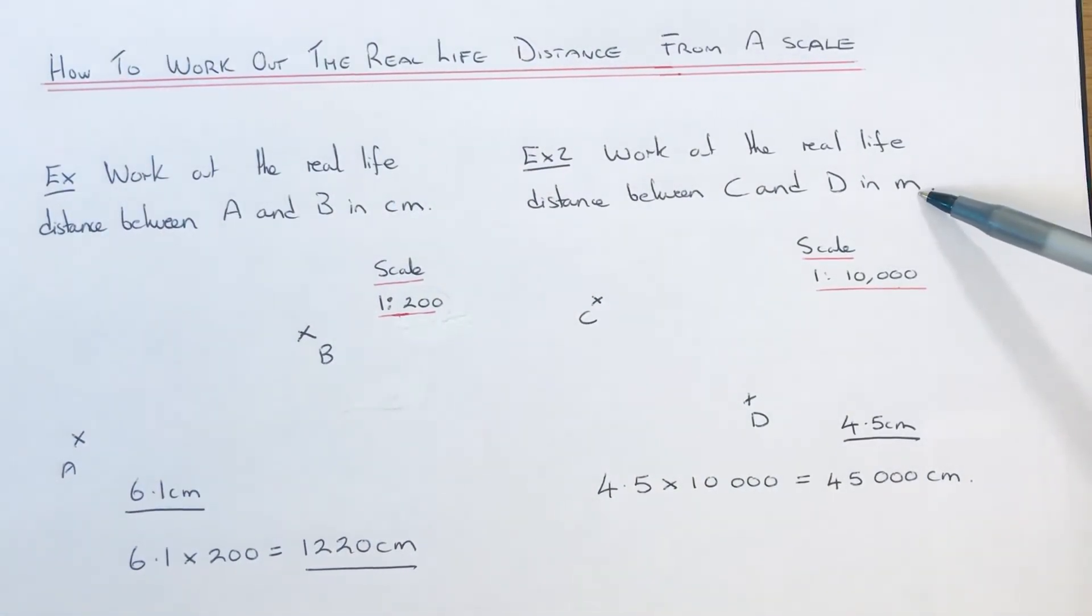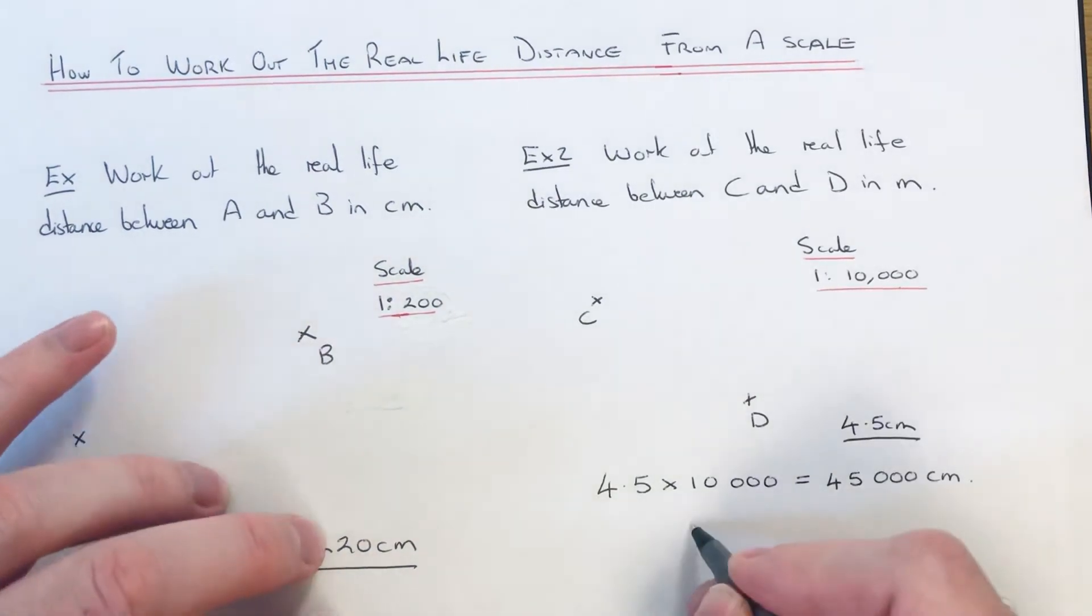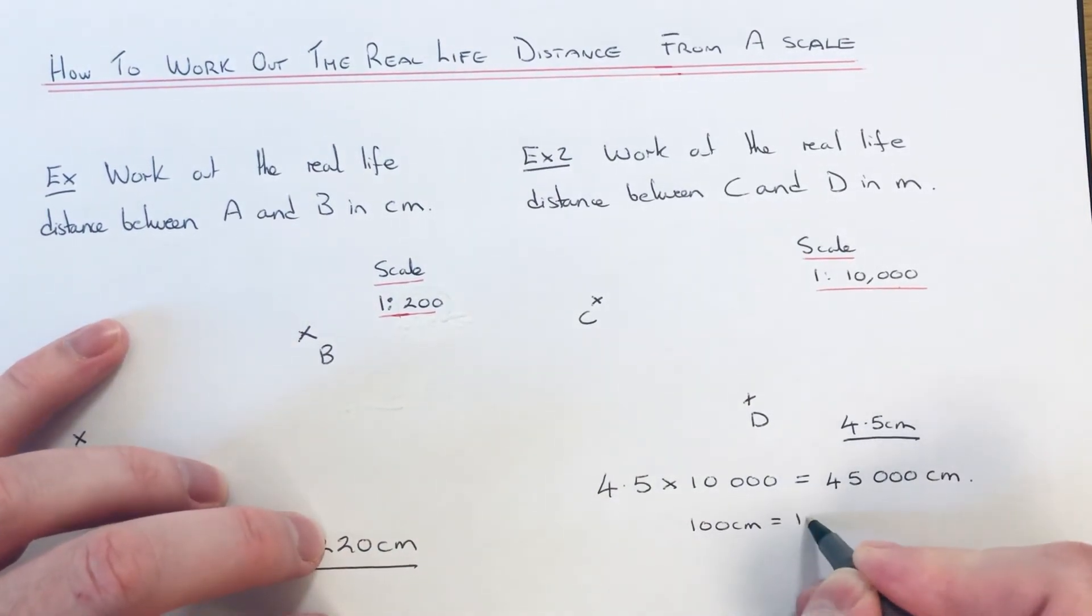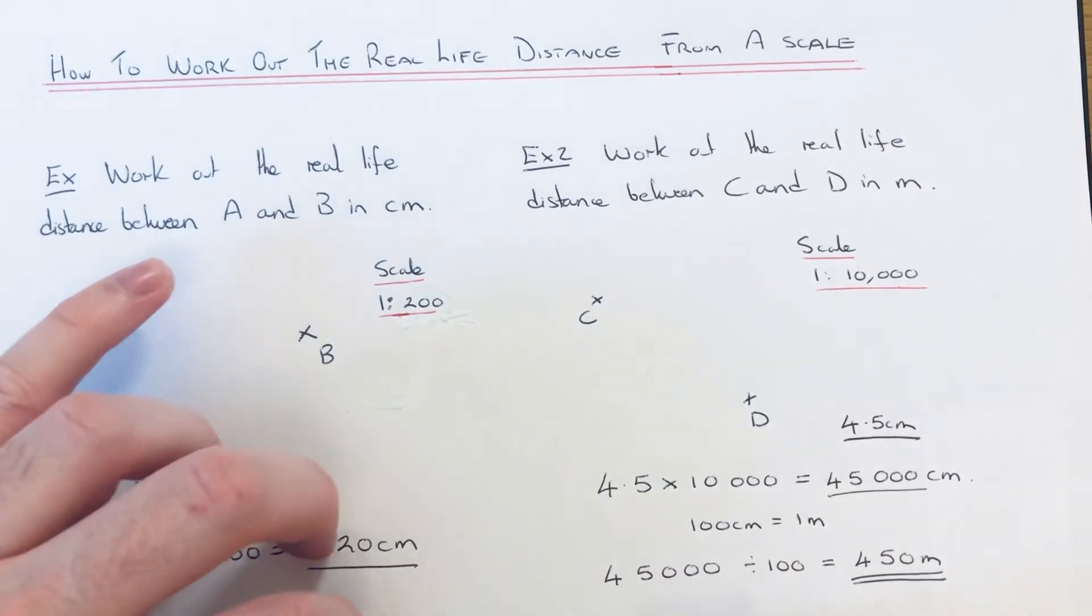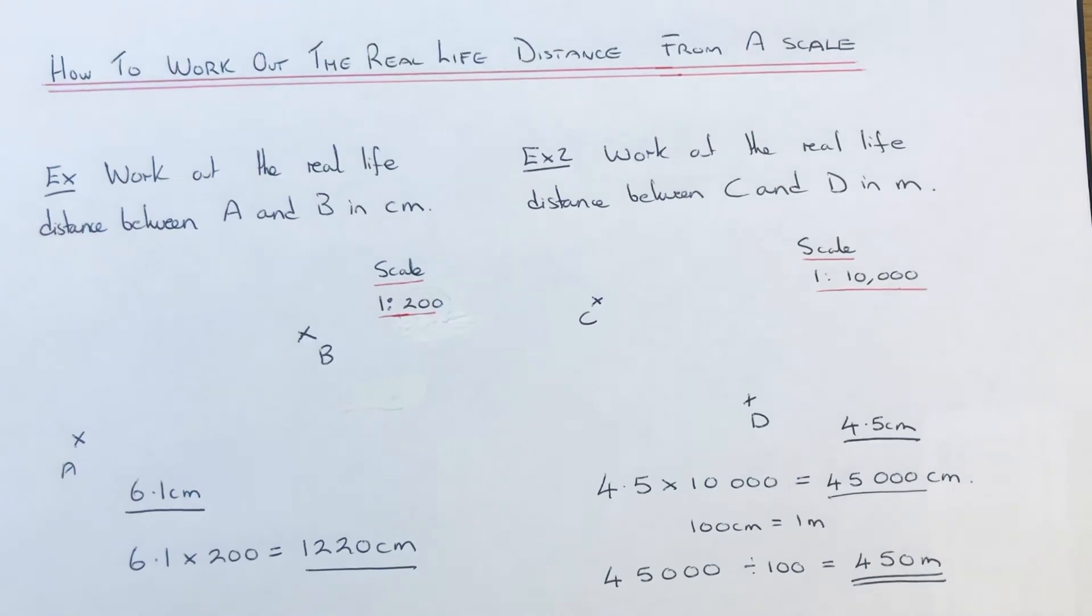There are 100 centimeters to 1 meter, so we now just need to divide this answer by 100, and that will give us 450 meters. So that is the real-life distance between C and D in meters.